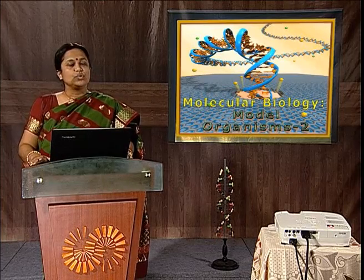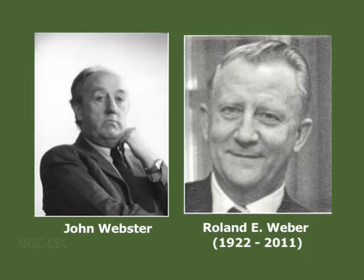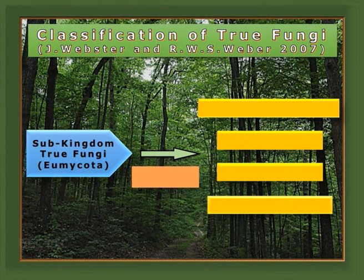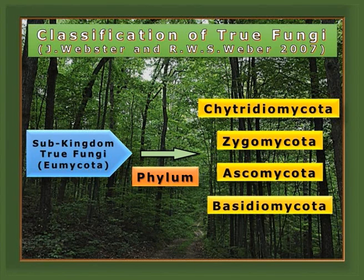To enter into the study of fungi as a model organism, we should classify them. The classification established in 2007 by Webster and Weber shows that the sub-kingdom true fungi, Eumycota, can be divided into the phyla Chytridiomycota, Zygomycota, Ascomycota, and Basidiomycota.